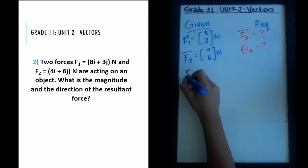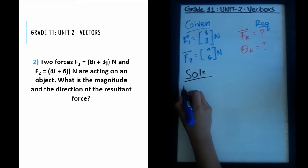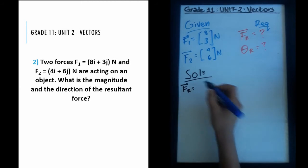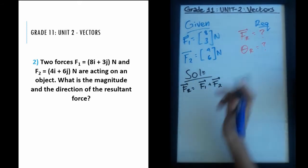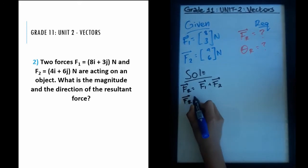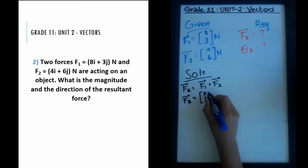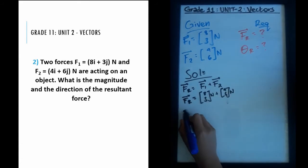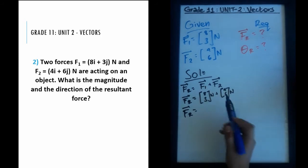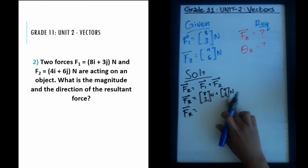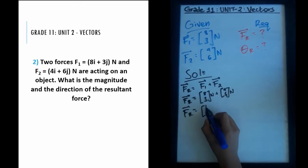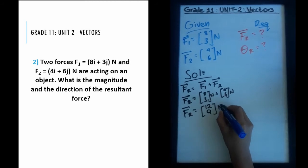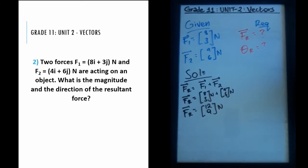For the solution, Fr will simply equal the sum of F1 and F2. Replacing values, that would be (8, 3) Newton plus (4, 6) Newton. Adding vectors in this form is straightforward — you just add the top numbers with the bottom numbers. So 8 plus 4 gives 12, and 3 plus 6 gives 9.